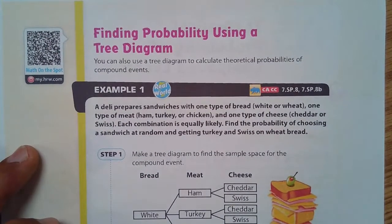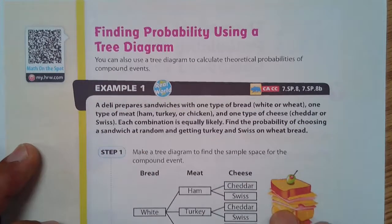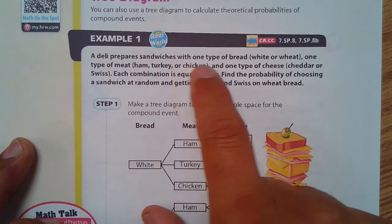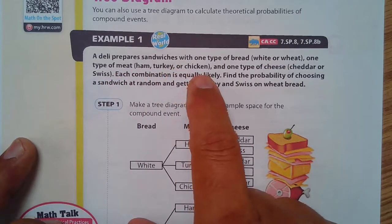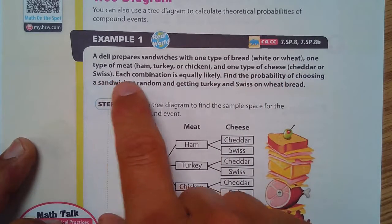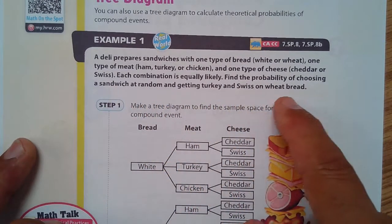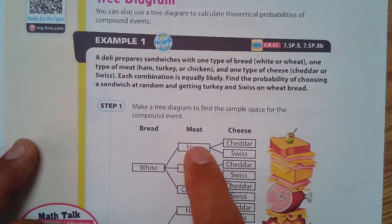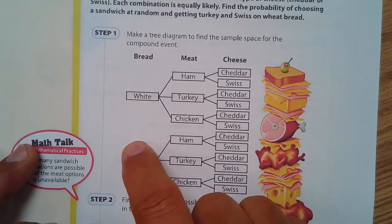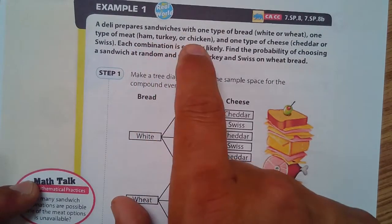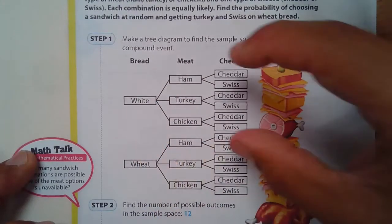Finding the probability using a tree diagram. You can also use a tree diagram to calculate the theoretical probabilities of compound events. In example one, a deli prepares sandwiches with one type of bread — white or wheat — one type of meat — ham, turkey, or chicken — and one type of cheese — cheddar or Swiss. Each combination is equally likely. You can get ham, turkey, or chicken for each type of bread, which is why the meat options are repeated for each bread branch.